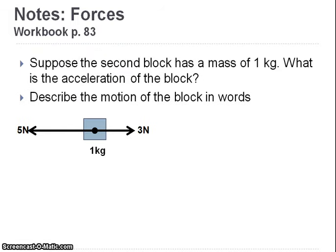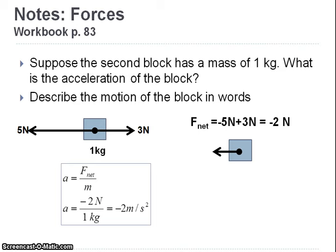Suppose the mass of that block is one kilogram. From Newton's second law, acceleration equals net force divided by mass. We already found the net force was negative two Newtons, so negative two Newtons divided by one kilogram gives an acceleration of negative two meters per second squared. Since it's accelerating to the left, if the block was initially at rest, it would start moving to the left with increasing speed.